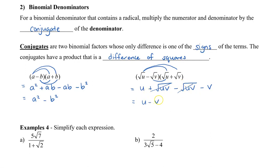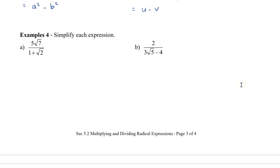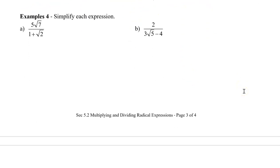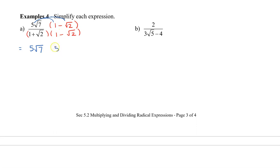Let's try it with fractions. The conjugate of the denominator (1 + √2) is (1 − √2). So I'm going to multiply the top and the bottom by (1 − √2) — write it with brackets so we can see it's a separate binomial. In the numerator: 5√7 times 1 is 5√7, and 5√7 times (−√2) gives −5√14.